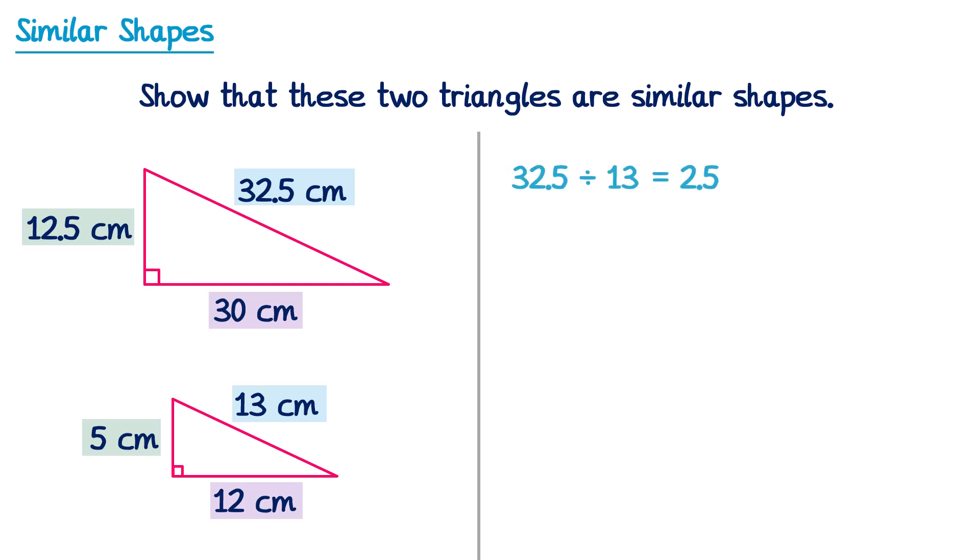There must be the same scale factor between all pairs. Starting with the blue pair: 32.5 divided by 13 gives 2.5. The green pair: 12.5 divided by 5 is also 2.5. And the purple pair: 30 divided by 12 is also 2.5.